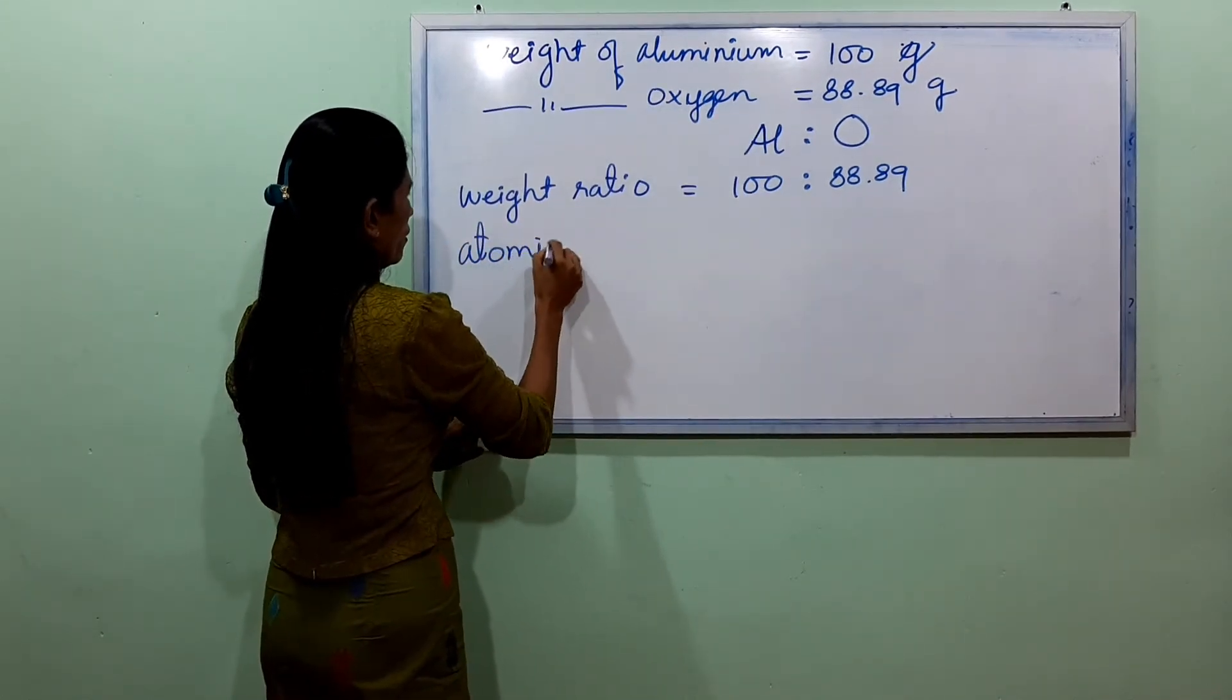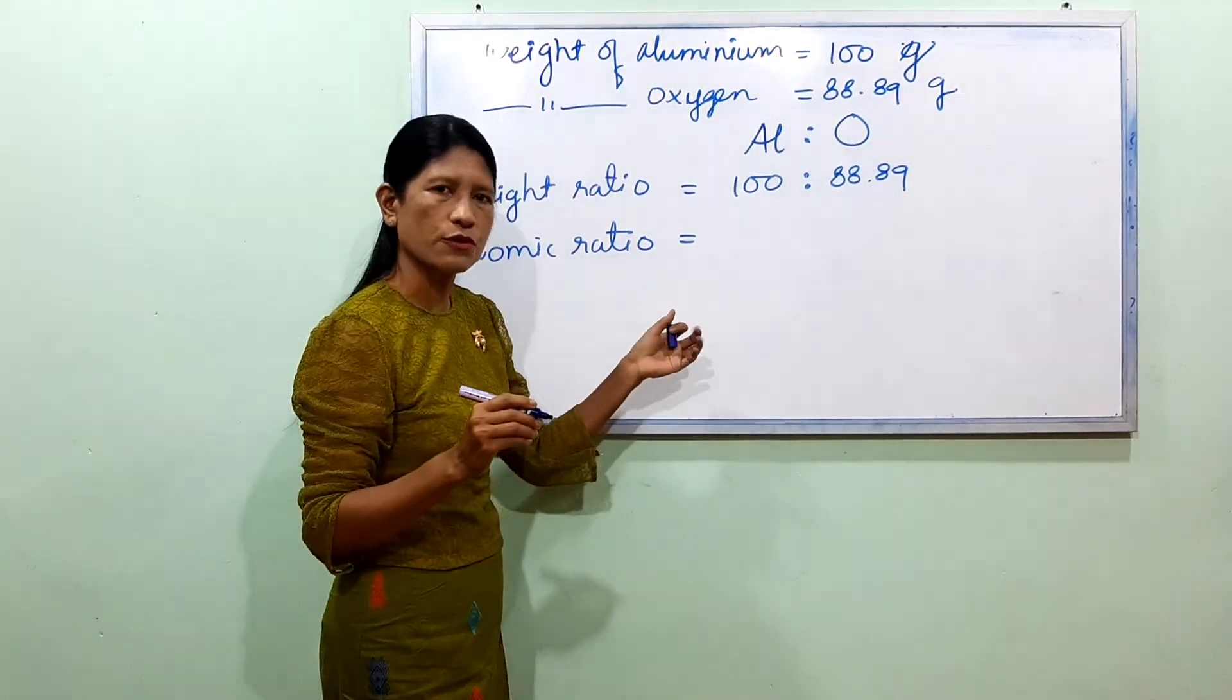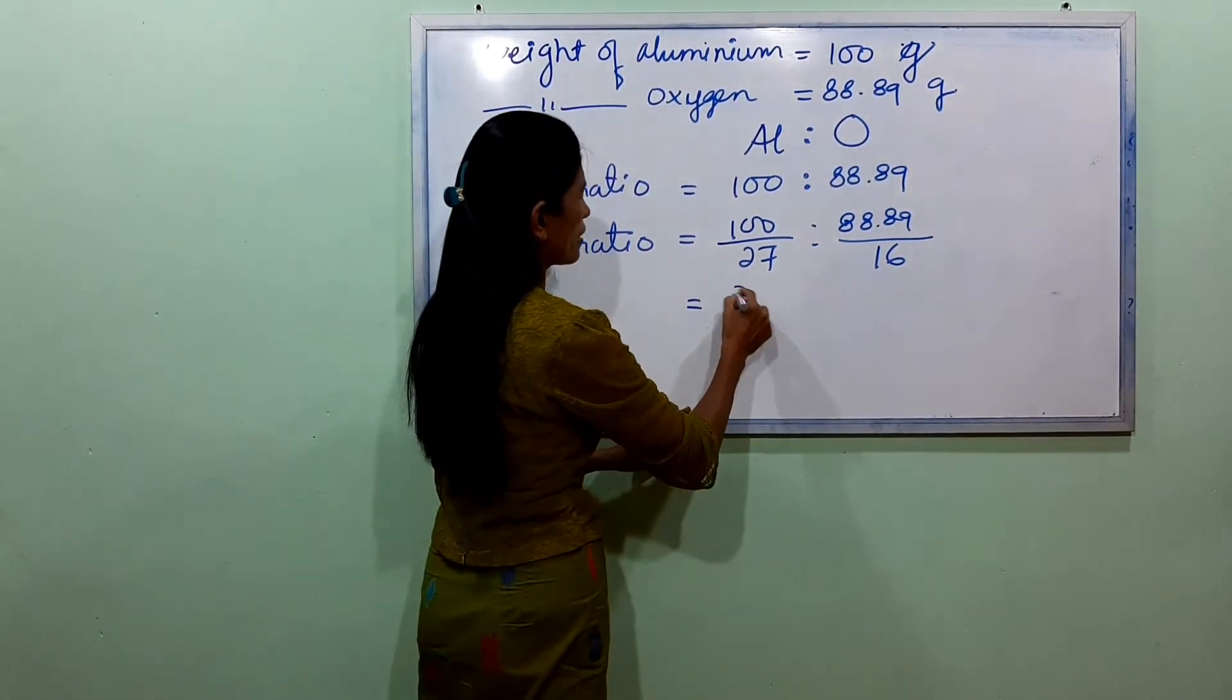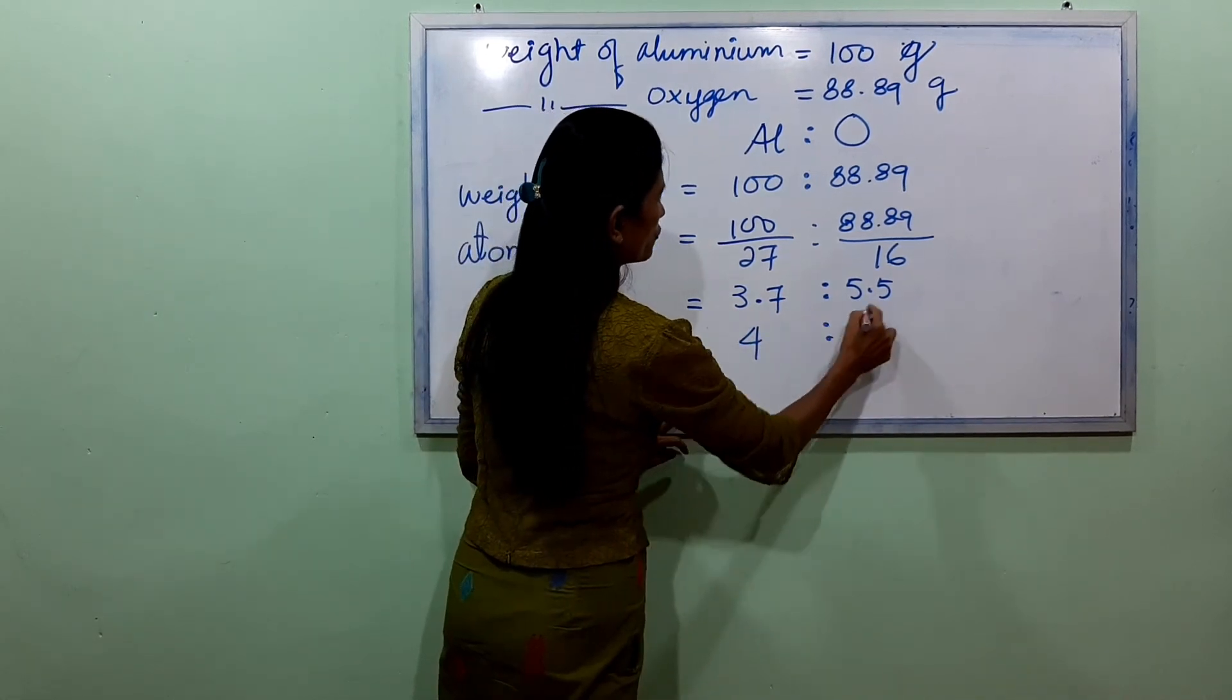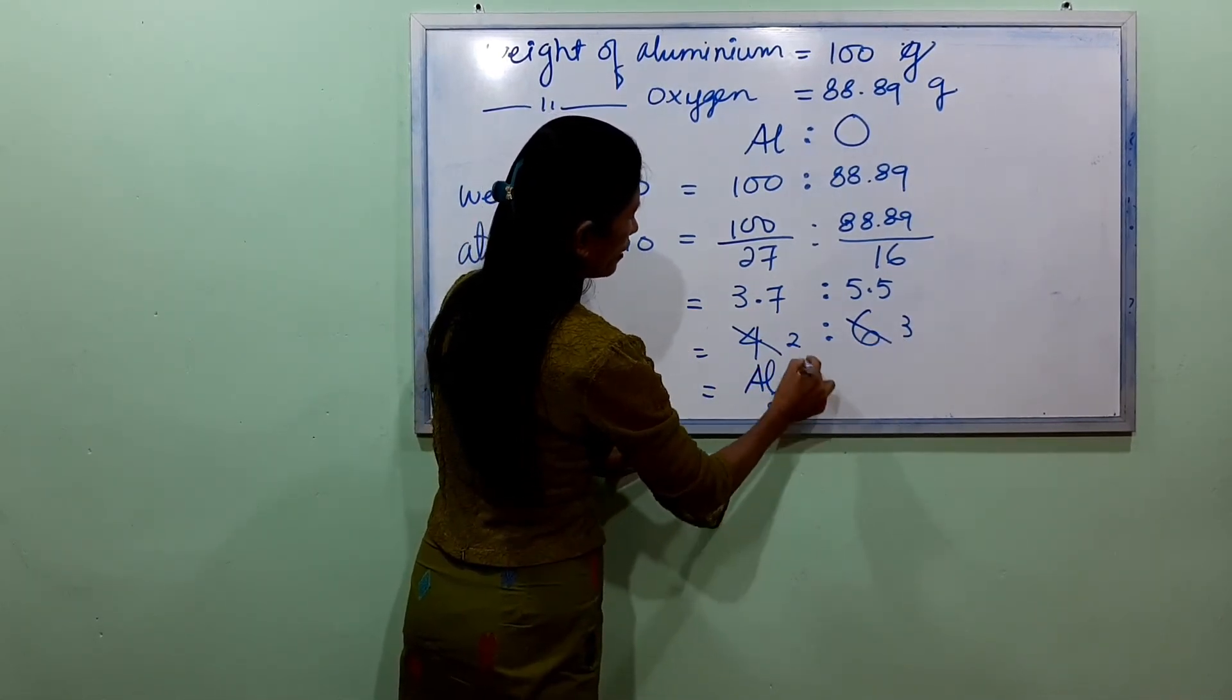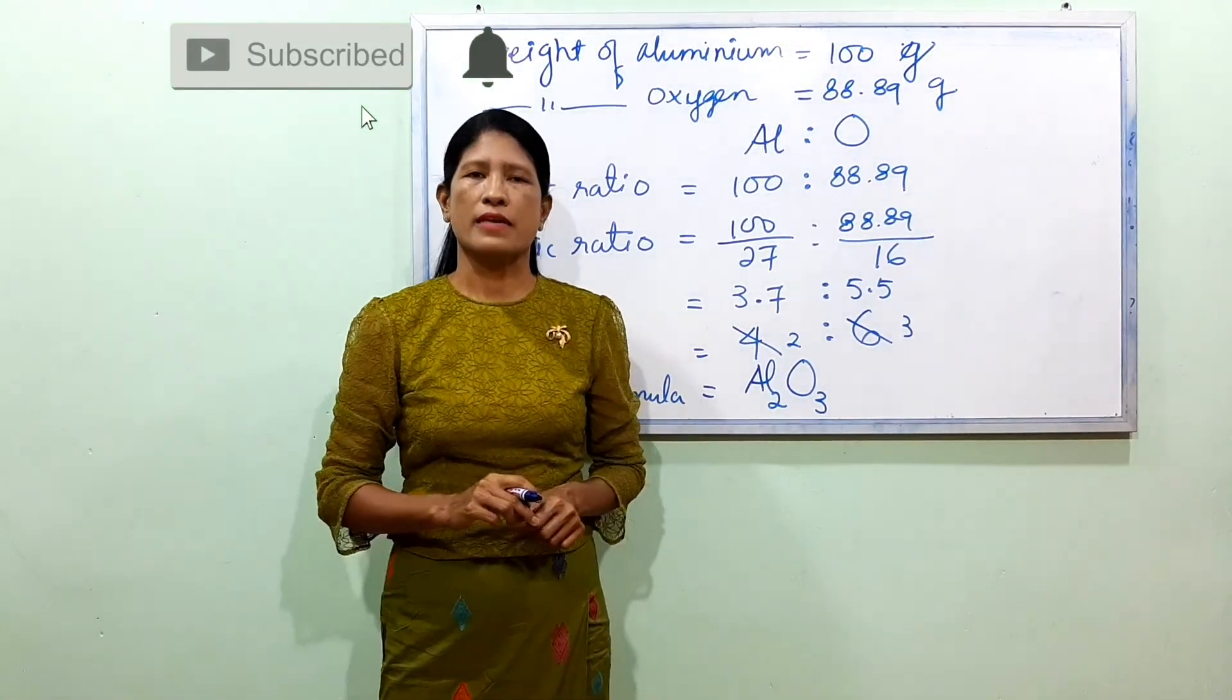For atomic ratio, divide by atomic masses: 100 divided by 27 for aluminum, and 88.89 divided by 16 for oxygen. This simplifies to a 2 to 3 ratio. The empirical formula is Al₂O₃.